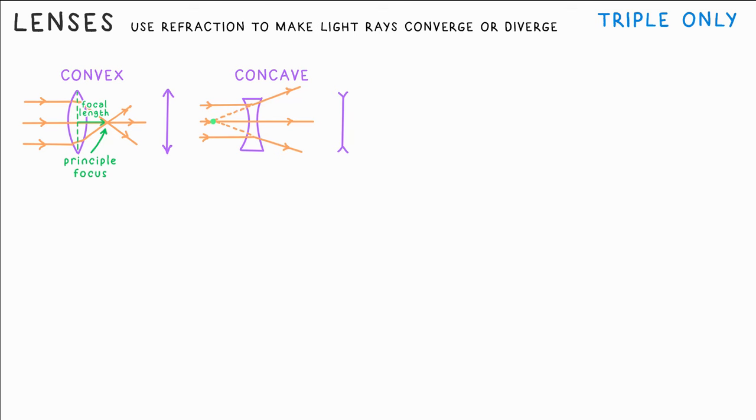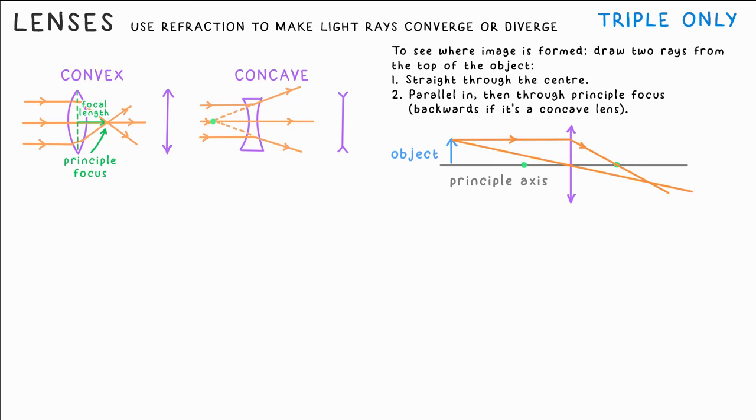However, light doesn't usually come from objects infinitely far away, but from objects a little bit nearer. The object could be anything, but we often represent it with just an arrow. Convex lens can then project an image using the light that comes from the object, but we only consider the light coming from the top of the object. And we can do that by drawing two rays. One always goes straight through the center of the lens, and one goes parallel into the lens, then through the principal focus. Where these two rays meet is where the image is formed. That's where you want your projector screen or retina or camera sensor to be in order to get a clear image formed. You'll also notice that the image is smaller than the object, so we say it's diminished. It's also upside down, so we say it's inverted.